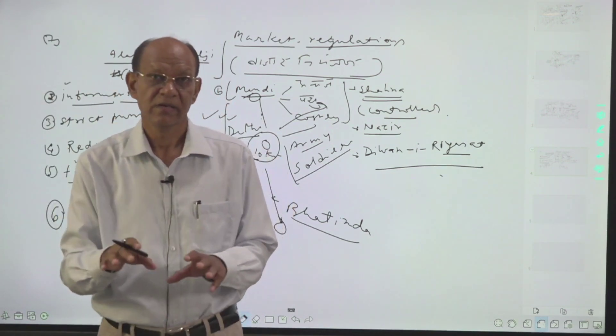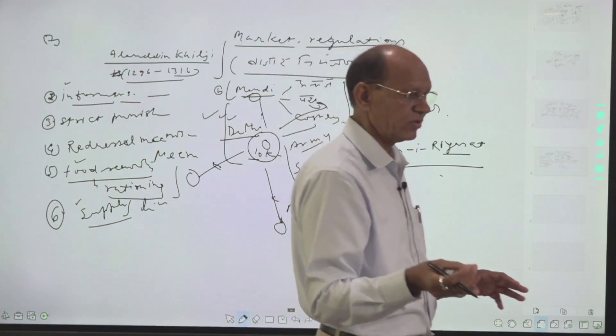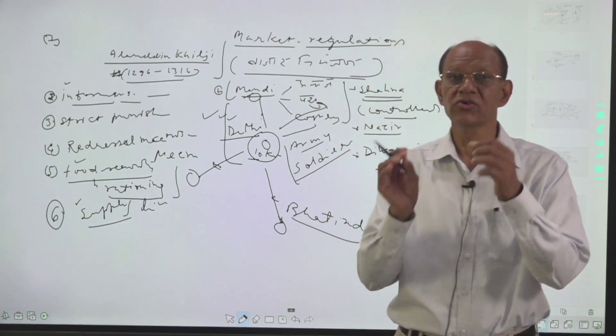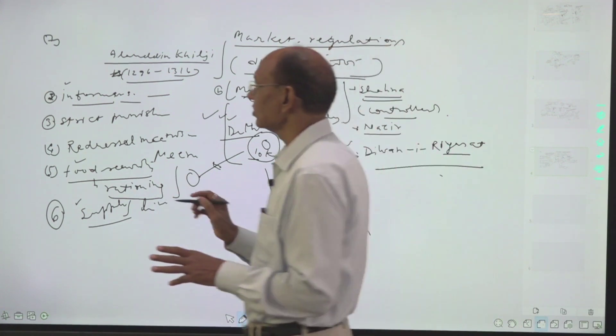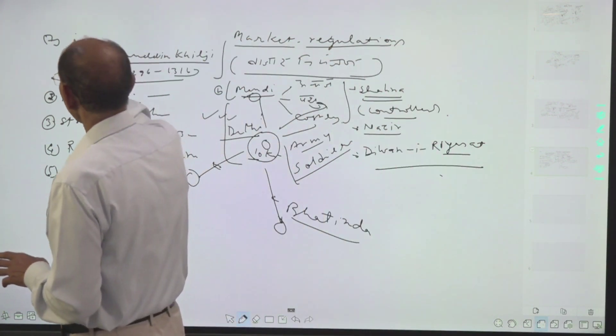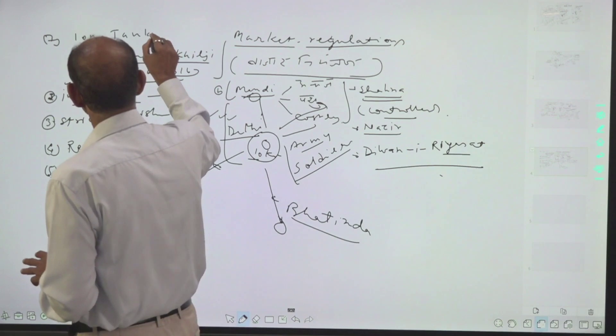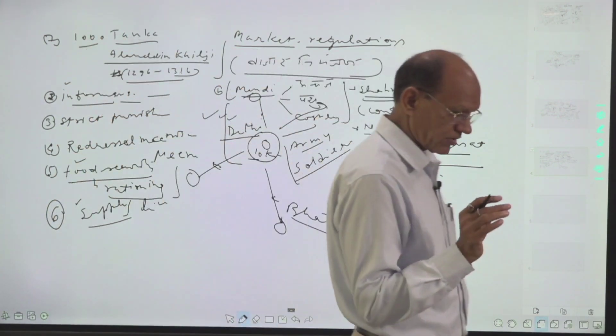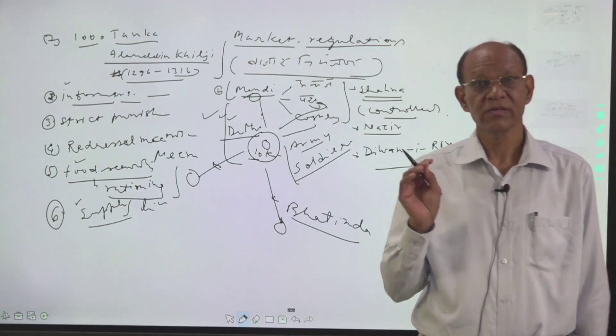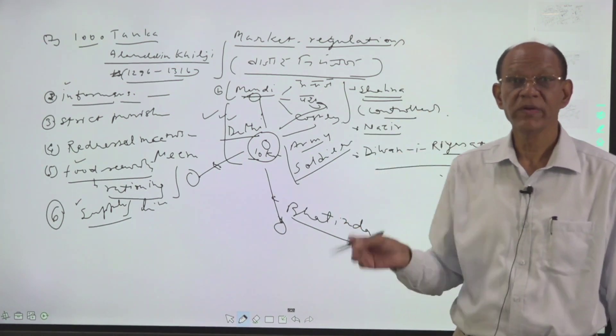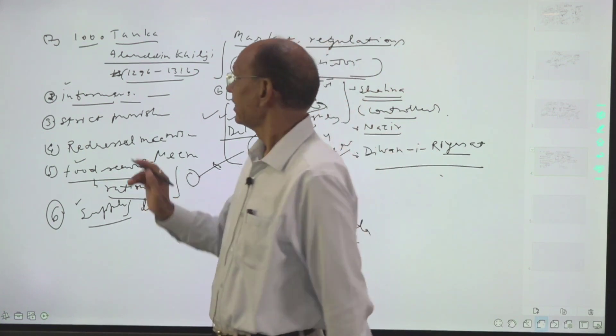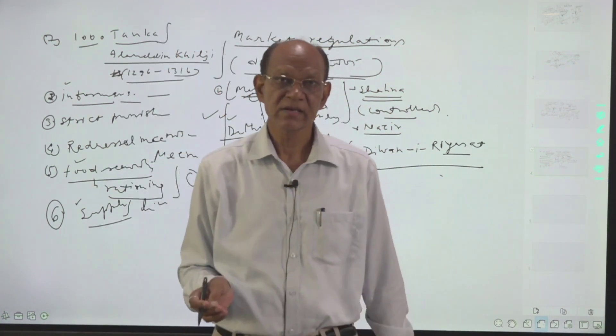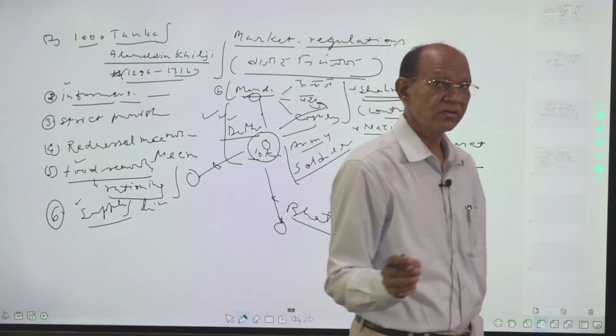There were limited limits. If any person was shopping for more than 1,000 tanka, which was a silver coin, his transaction had to be reported. It was mandatory that you have to tell where did you find this source of income.